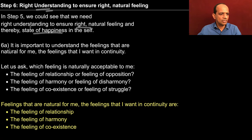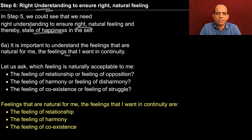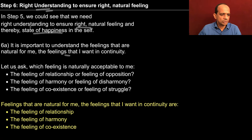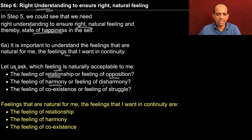Now in step six, what we are saying is that it is important to understand the feelings that are natural for me, the feeling that I want in continuity. So now I need to work out the feelings which are naturally acceptable to me, which I need to understand so that I am happy in continuity. Here we are questioning ourselves: which feeling is naturally acceptable to me? Feeling of relationship or feeling of position? Feeling of harmony or feeling of disharmony? Feeling of coexistence or feeling of struggle?